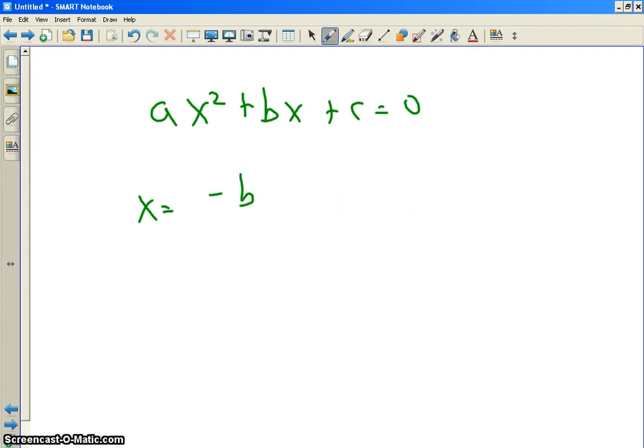The real part, negative b over 2a, plus or minus the imaginary part, square root of b squared minus 4ac all over 2a. Alright?